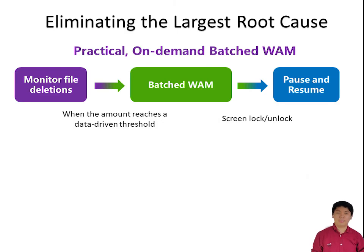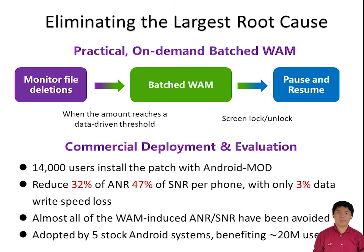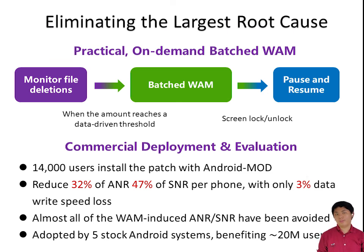To counter this problem, compared to the aggressive real-time WAM in Android, we devise a practical on-demand WAM that executes in a batch manner, driven by monitored file deletion amount and system states. We patch our on-demand WAM to Android Mode and release it to 14,000 opt-in users. As a result, 32% of ANR and 47% of SNR are reduced, incurring only 3% data write speed loss, and almost all WAM-incurred ANR and SNR are avoided.